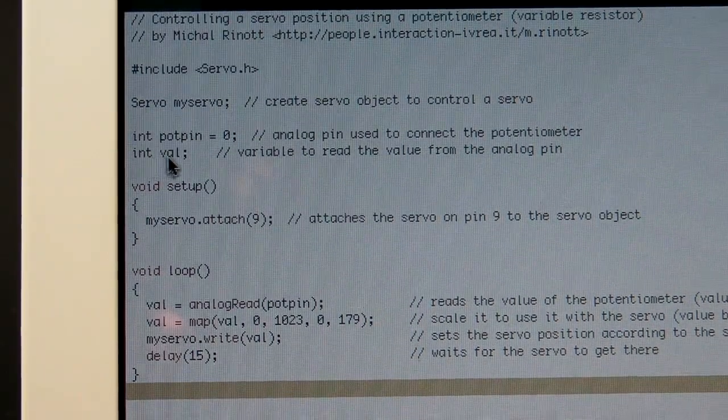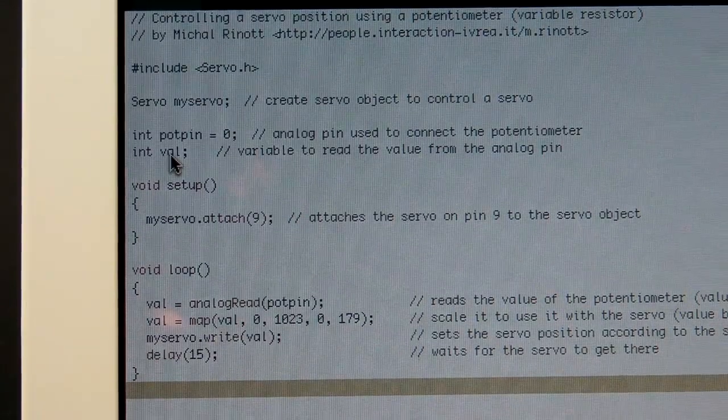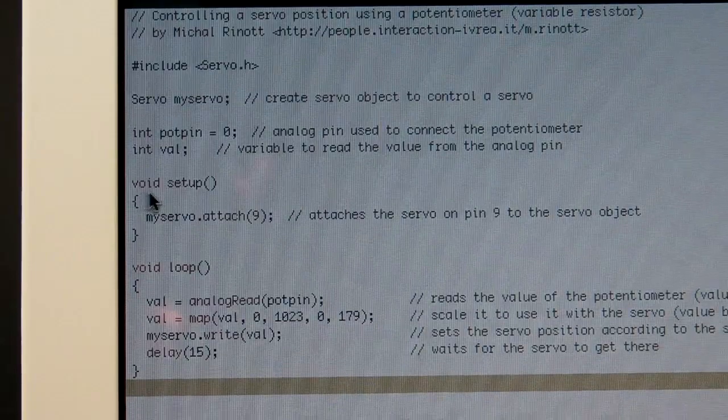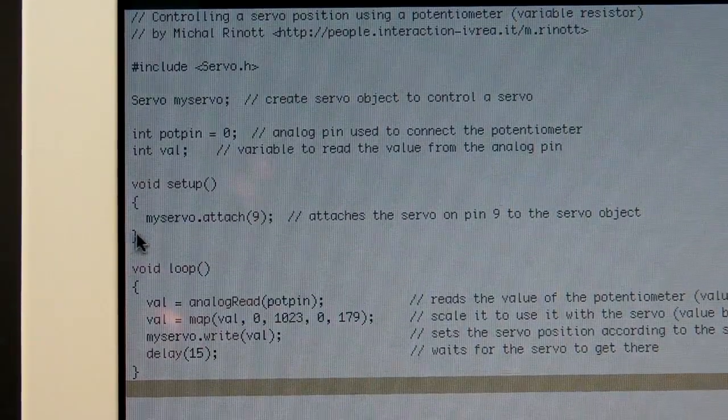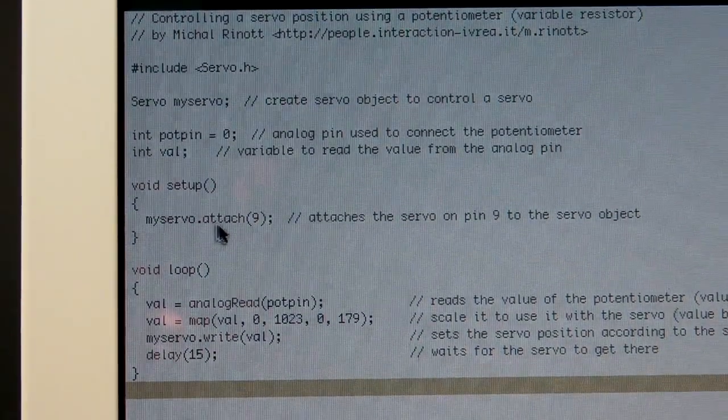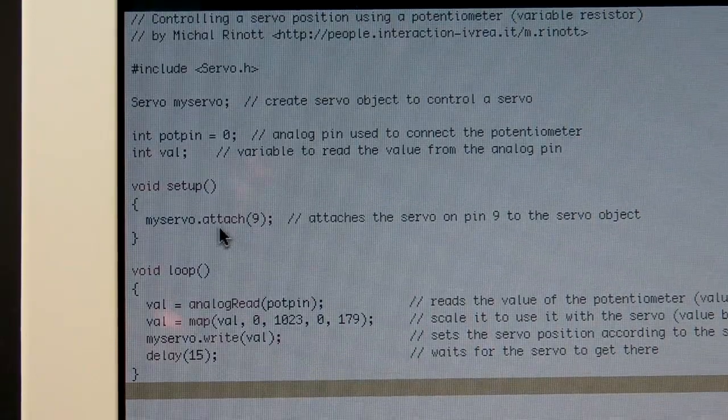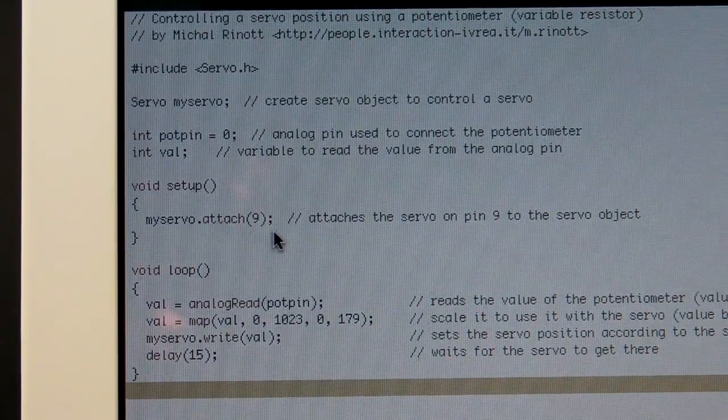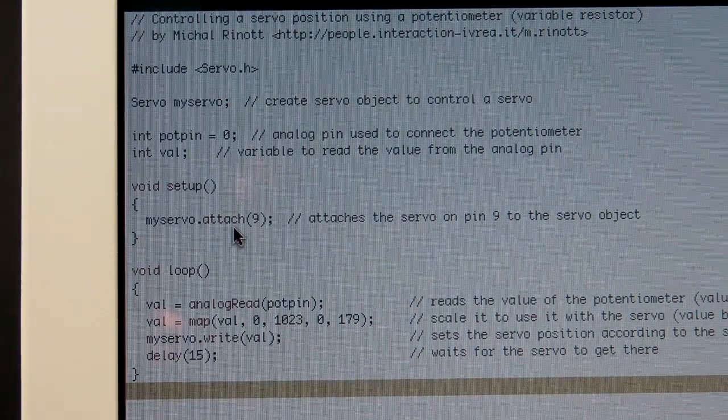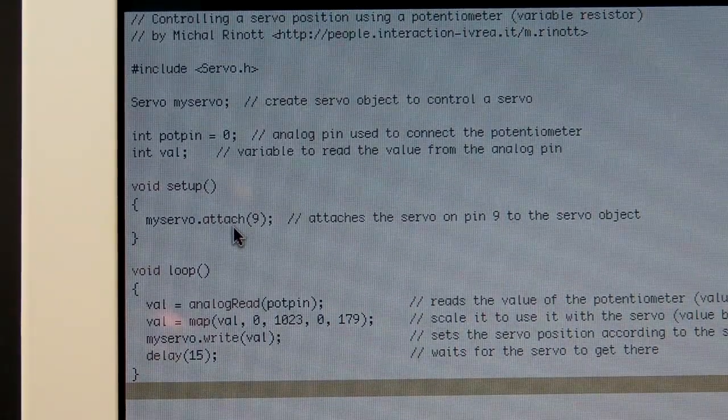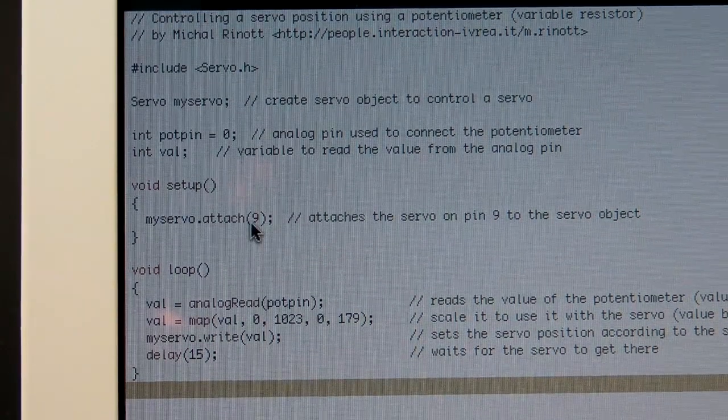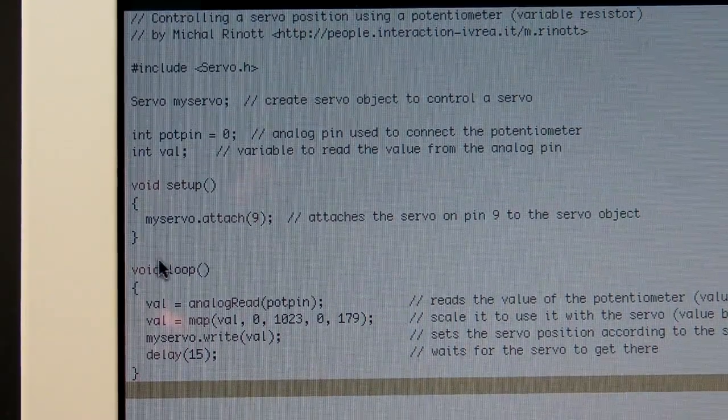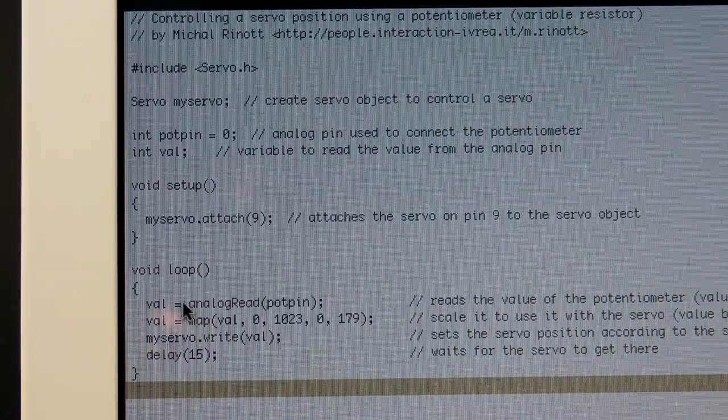The next one is a value that's going to store the variable that we're going to read from that analog pin. Okay, here's the void setup. All you need is the myServo.attach(9). And again, that relates to the servo library. We're going to go over that in more detail later, but for now just know that you need to include that. There's a lot more information on Arduino.cc. That just means that you're attaching the signal wire of the servo to pin nine. And then here's the guts of the program, the void loop.